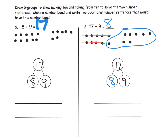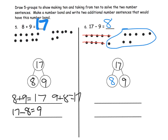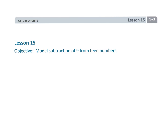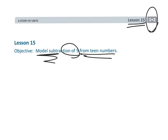The directions say: draw 5 groups to show making 10 and taking from 10, make a number bond, and write two additional number sentences. With this number bond, students might say 8 plus 9 is 17, or 9 plus 8 is 17 — the commutative property. They might also say 17 minus 8 is 9, or 17 minus 9 is 8. Give students the opportunity to explore and find all of these. That wraps up first grade module 2 lesson 15: using models to subtract 9 from teen numbers.